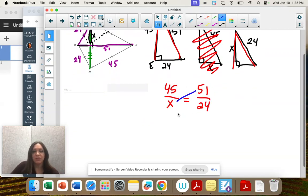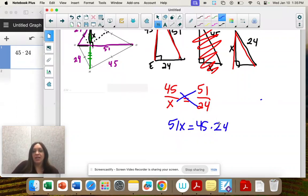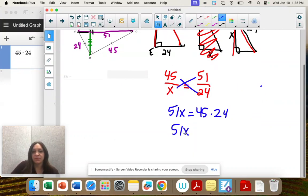Now we cross multiply. So 51x equals 45 times 24, which is 1080. Now to solve for x, we're going to divide both sides by 51.